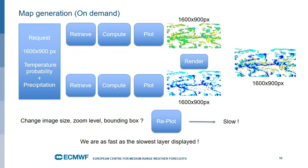Our first approach ten years ago was to always show relevant data by generating maps as single tiles. For example, here is the workflow: we receive a request for a 1600 by 900 pixel map of temperature probability and precipitation. In our back-end, we had to retrieve the data for those two different layers, do the computation based on input from the user, and then do the plotting. For each layer we generate a map and then render them together — basically combining them to generate a final PNG and then serve it.